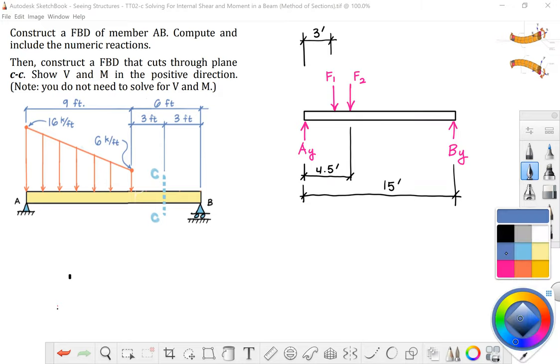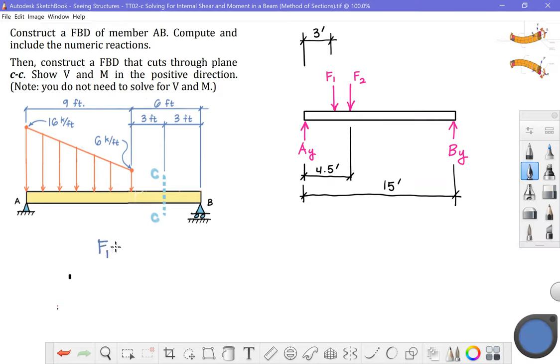Now we're ready to start figuring out what those forces are and solve these numeric reactions on the problem. There's a blue color here. Alright, so let's figure out what F sub one is. That's the piece underneath the triangle, the area under the curve. So the height of the triangle is 16 minus 6 equals 10 kips per foot, the base of the triangle is nine feet. And of course, we need that one half modifier. It's going to give us 45 kips.